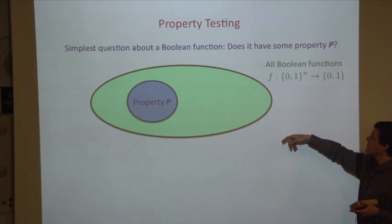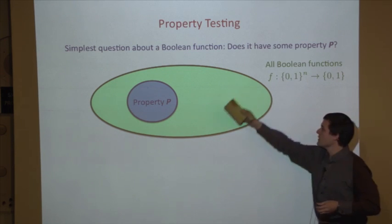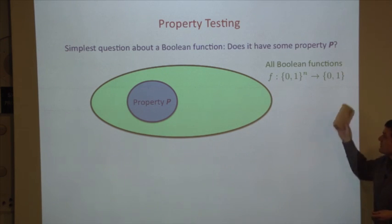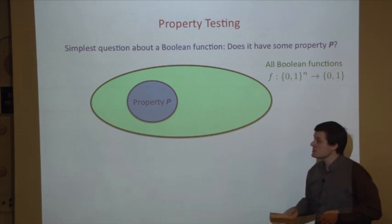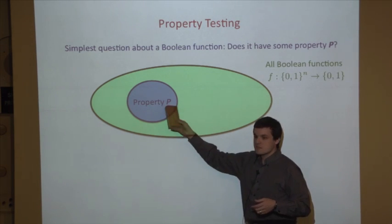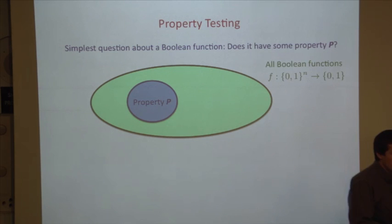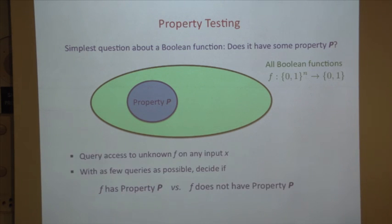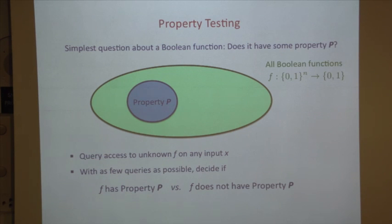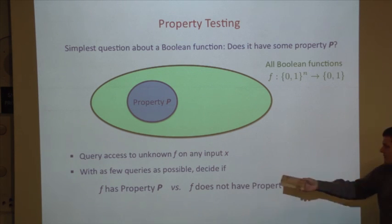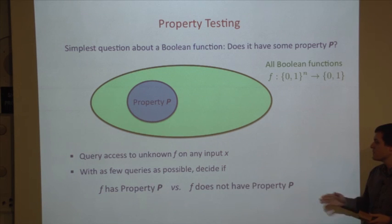The function we're dealing with could be any Boolean function. This green oval represents the space of all Boolean functions, and the collection of functions having the property is just a subset. We have query access to the function — we submit inputs x and get back the function's value. We'd like to make as few queries as possible and figure out if the function has the property.